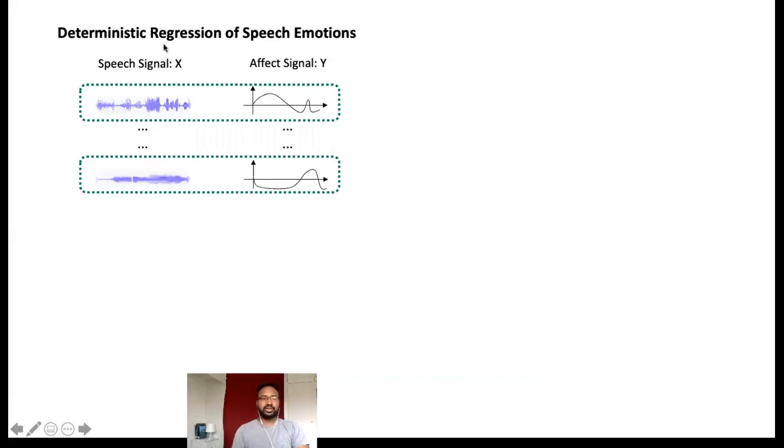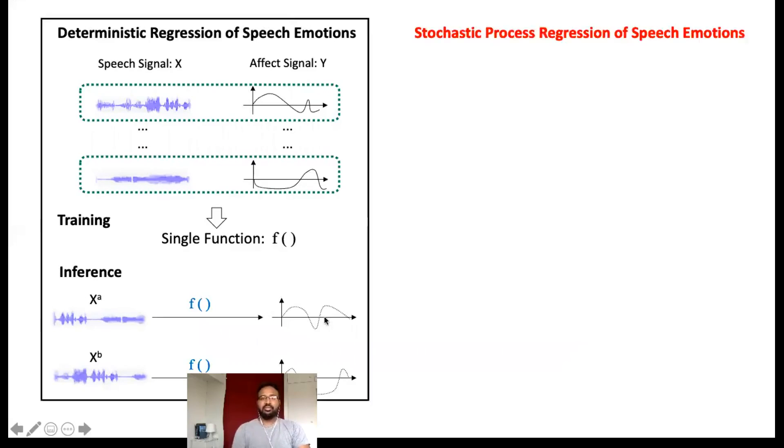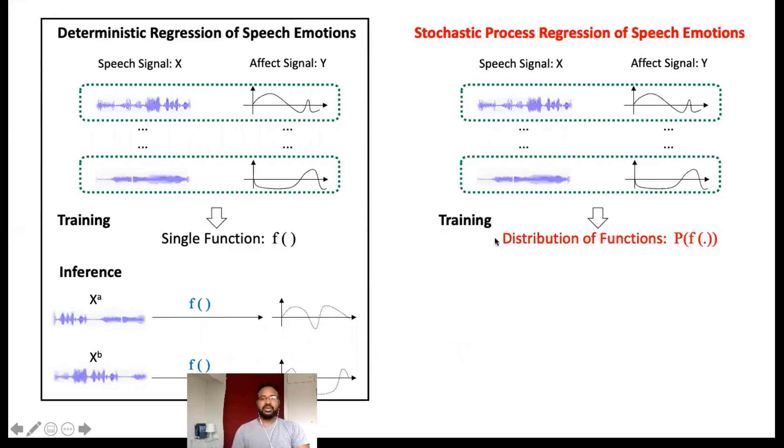Most speech emotion recognition models use deterministic regression methods in which the training process results in a single mapping function and that function is applied to all the test inputs to predict the emotion labels. In contrast, our method based on stochastic process regression involves learning a distribution of functions during training and at test time, given a specific test input, we first condition our learned distribution on that input in order to draw a function instantiation.